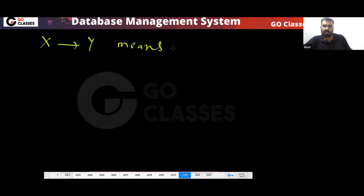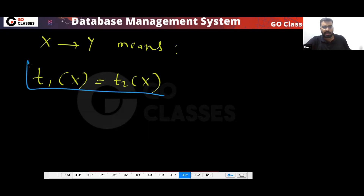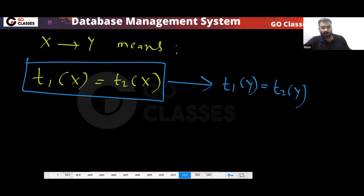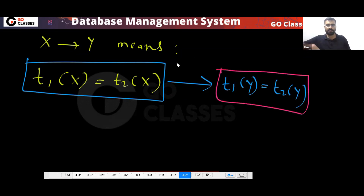When you say that X determines Y, what this means is that whenever two tuples have the same value of X, they will have the same value of Y.